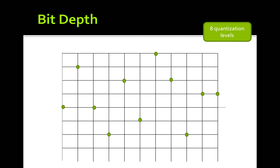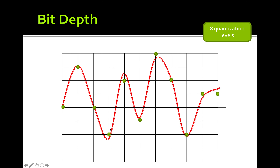To illustrate bit depth: with 8-bit quantization we have only 8 quantization levels. The actual sound may fall between levels, so we must approximate to the nearest upper or lower point. These deviations from the actual value represent approximation error. If we have 16 quantization levels instead, the sound wave is more closely matched to the actual signal, so higher bit depth always means higher sound quality.